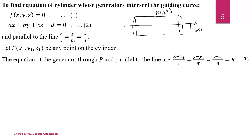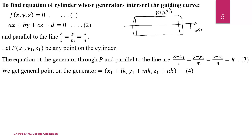From this equation, we find the general point — that is, we find X, Y, Z. For X, we consider the first and last ratios: X = X1 + LK. Similarly, we find Y = Y1 + MK and Z = Z1 + NK. These are the general points, and for some value of K, these satisfy equations 1 and 2.